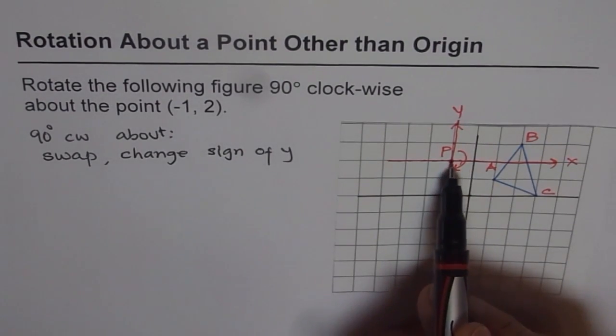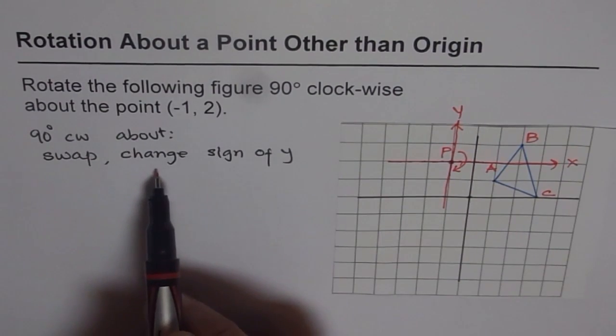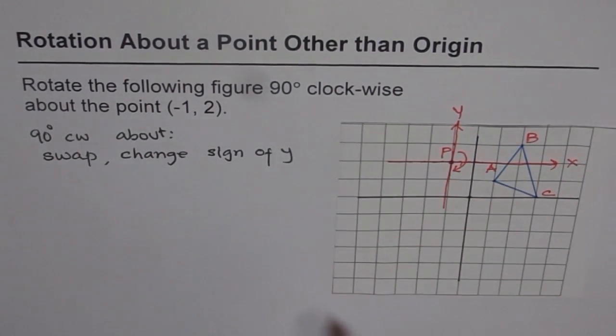Now if P is my origin and that is the object, then I can again follow the same rule, right? And rotate it.